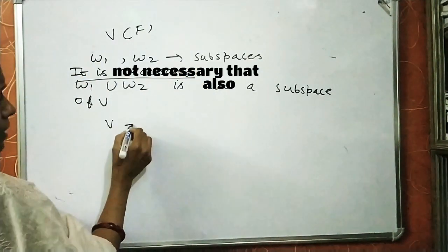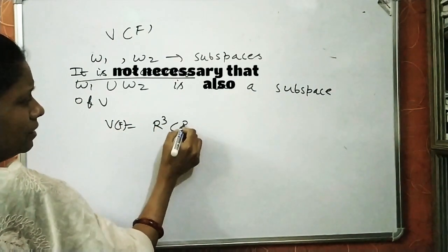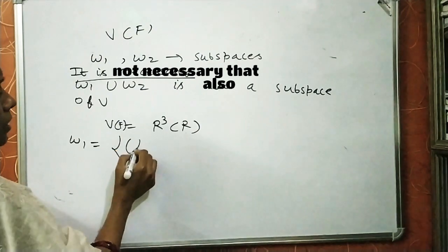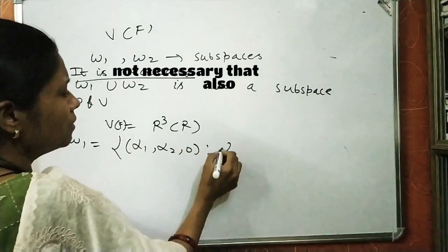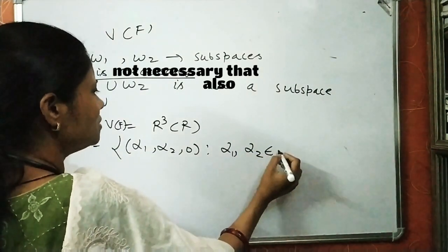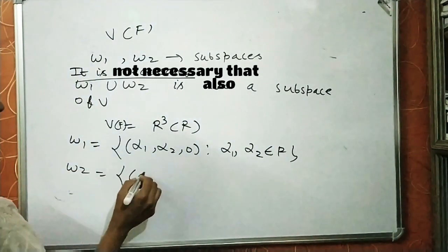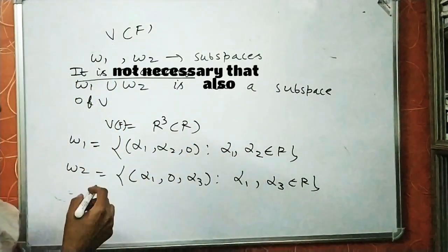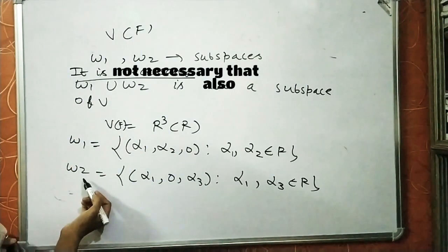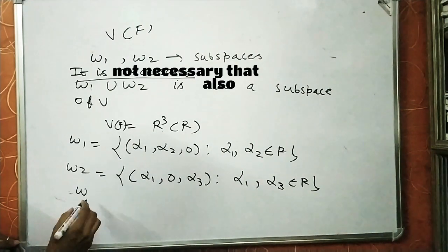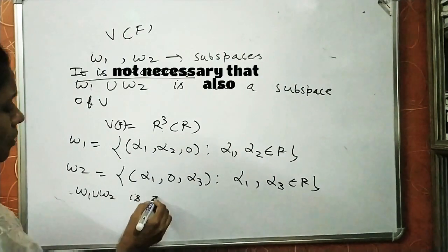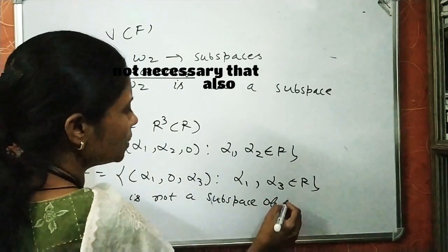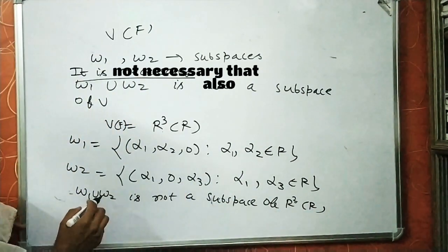Let us take the vector space V = R³ over R, the set of all triplets of real numbers which forms a vector space over the field of real numbers. We have shown in previous lectures that both W1 and W2 are subspaces of this vector space R³. Now we have to show that W1 union W2 is not a subspace of R³. So let us take any two elements of W1 union W2.